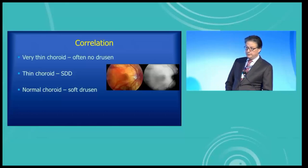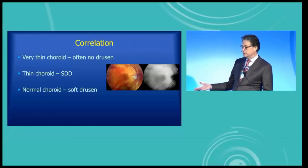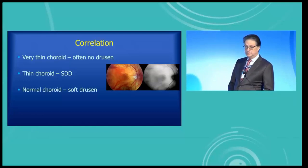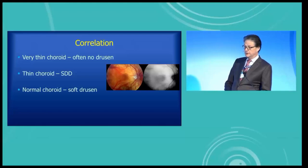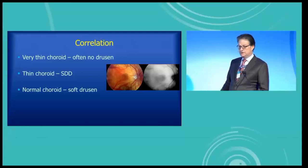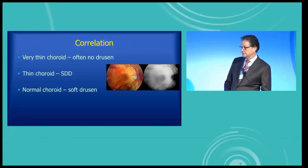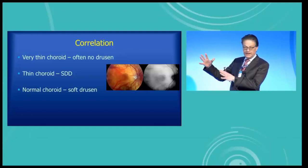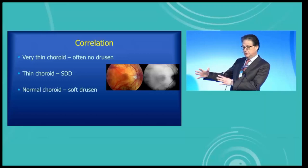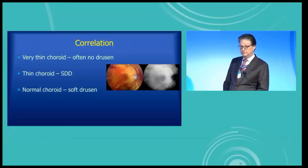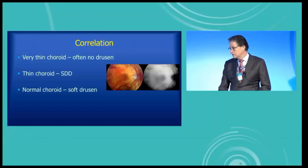We did a number of studies and found that subretinal drusenoid deposits are associated with thin choroids, and conversely, soft drusen are associated with normal thickness choroid. We also wrote a paper about people who have really thin choroids. You can get a really thin choroid just through aging, but the natural person to get a really thin choroid is a high myope. So when a high myope gets older, their choroid gets extremely thin, and guess what — they don't have drusen or pseudodrusen. That's an unusual thing to think about, since myopia is not correlated in any way with complement factor H or ARMS2. So conceivably they have the same genetic makeup but don't go on to show any signs of early AMD.